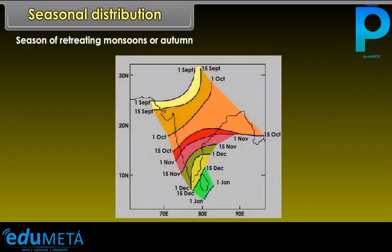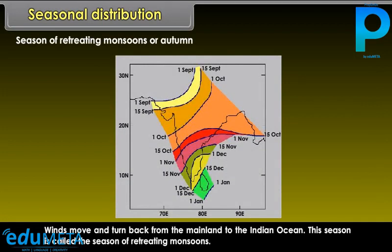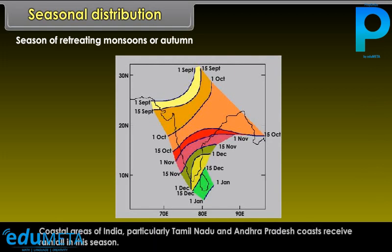In the season of retreating monsoons, or autumn, winds move and turn back from the mainland to the Indian Ocean. Coastal areas of India, particularly Tamil Nadu and Andhra Pradesh coasts, receive rainfall in this season.